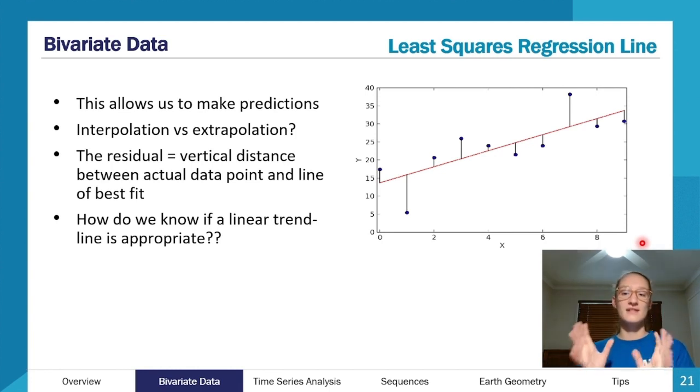Also have a go, see if you can identify where the residuals are on this graph. Our residuals are these distances here. So the residual is the vertical distance between the actual data point and its predicted value from the line of best fit. So this would be our residual value here for this point here.